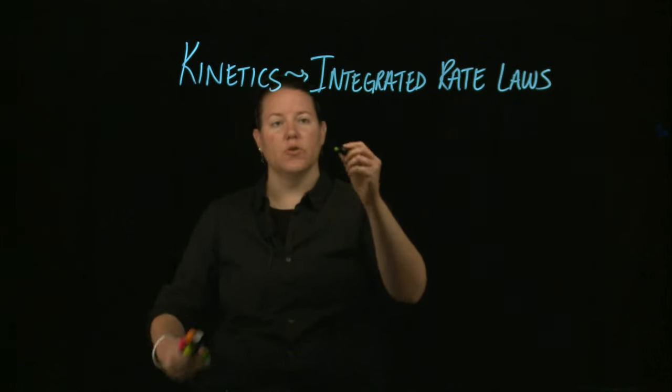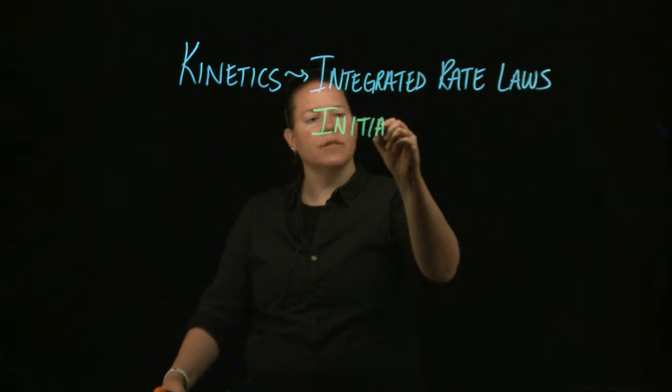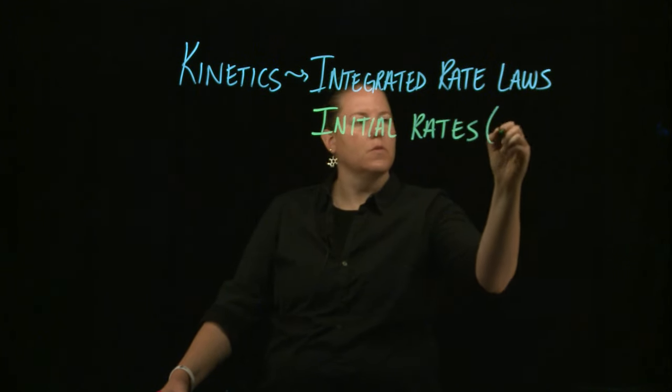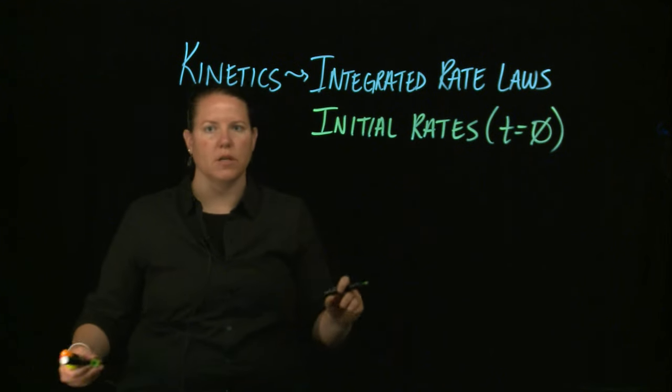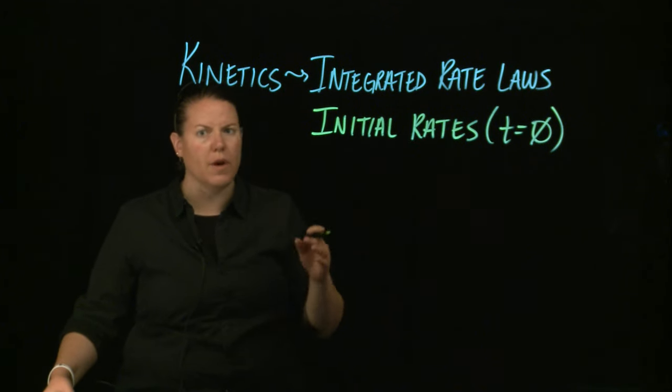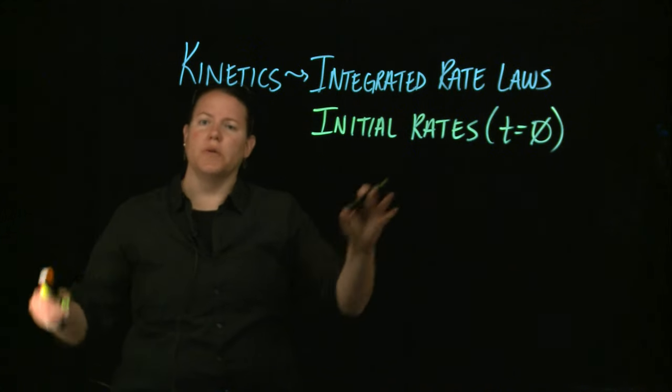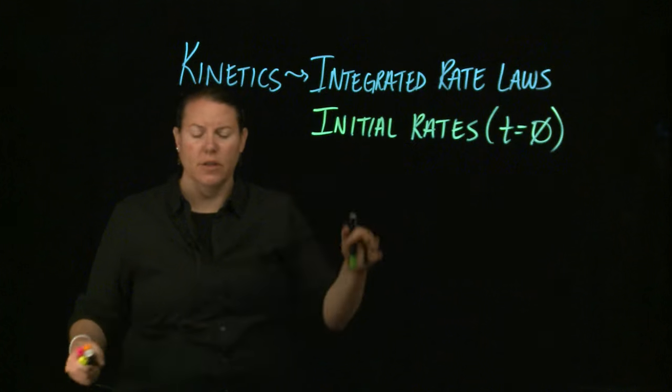So if you haven't seen the initial rates video, here's kind of the idea. Initial rates are when t equals zero. So time here is at the beginning, it's not at the end, it's not in the middle, it's at the beginning. Right as the reaction starts. And so t equals zero for these. And that's where you get the big chart where you have multiple experiments being done.